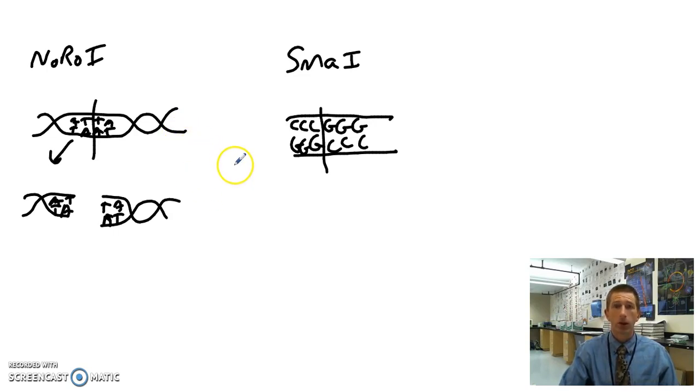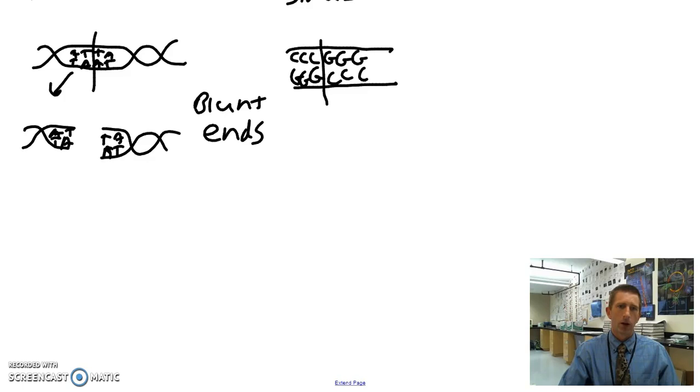All right, so NorI and SmaI are two restriction enzymes that give us what we call blunt ends. Blunt is usually referred to as the opposite of sharp. In biotechnology, blunt is the opposite of sticky. So blunt ends mean that at the very end of our fragments, both bases are paired up. We have no unpaired bases. All of our bases have pairs and they're hydrogen bonding and they're happy. So NorI, SmaI produce blunt ends. Our two other enzymes that we're going to talk about produce what are called sticky ends.